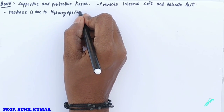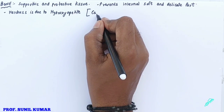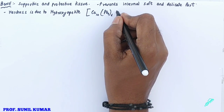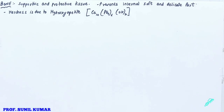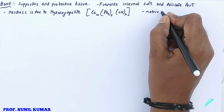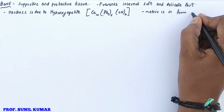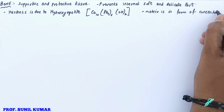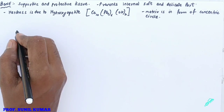Bone is hard because of the presence of a special chemical called hydroxyapatite. The formula for hydroxyapatite is Ca₁₀(PO₄)₆(OH)₂. The matrix of the bone is arranged in the form of concentric rings.